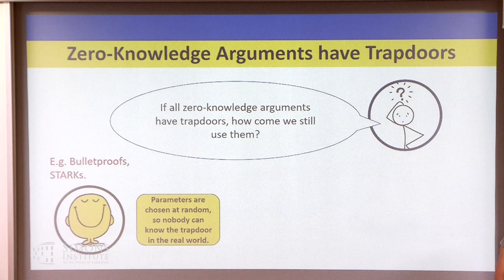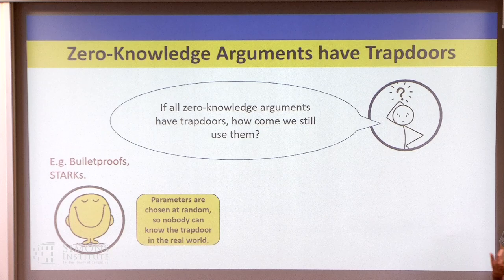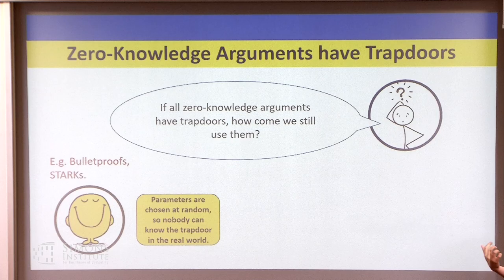This is quite serious. If you can break the integrity of your zero knowledge proof, why are you using it in the first place? Maybe you have some trusted party who's totally trusted and won't corrupt your scheme, but oftentimes you don't. You don't trust anyone, and you're stuck in a situation where you have a scheme you essentially can't use.